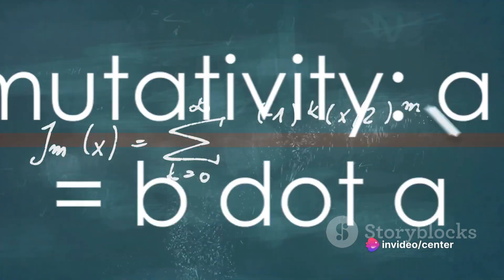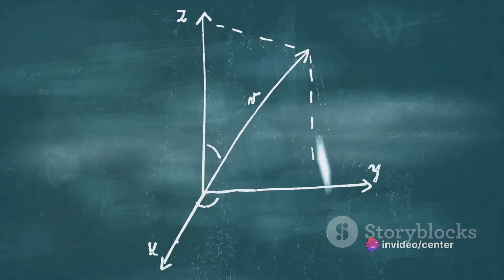First, there's commutativity. This means that A dot B equals B dot A. The order of the vectors doesn't matter.